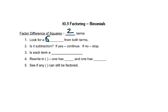The first step is always to look for a greatest common factor within the terms. If we have subtraction between our two terms, we get to keep going. If we don't, if we have addition, then we have to stop. Is each term a square? If so, we can keep going. If not, we have to stop. We'll write those in parentheses. One parentheses has a plus, one has a minus, and then we'll see if anything inside the parentheses can still be factored.